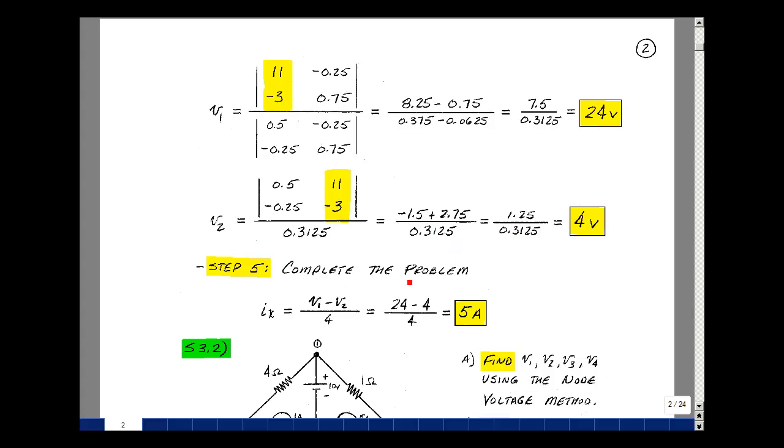Lastly, step 5 is to complete the problem, and we said that I sub X was equal to V1 minus V2 over 4. Once you know the node voltages, you can solve for any voltage or any current in your circuit. 24 minus 4 over 4 is equal to 5 amps. And this is Supplemental Problem 3.1.